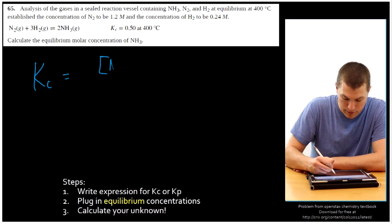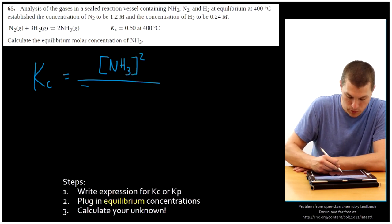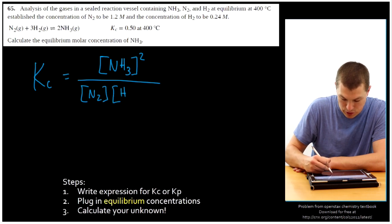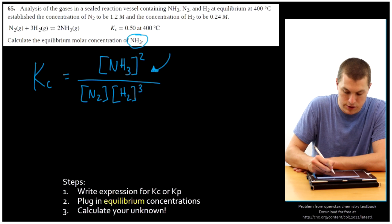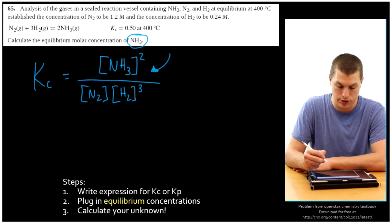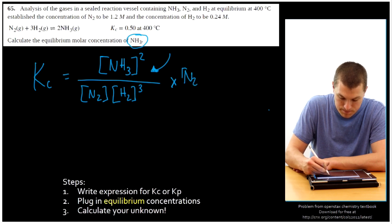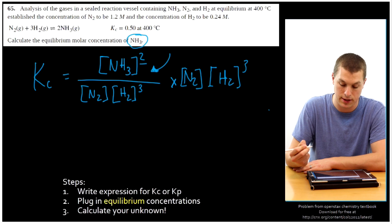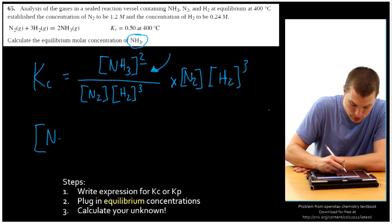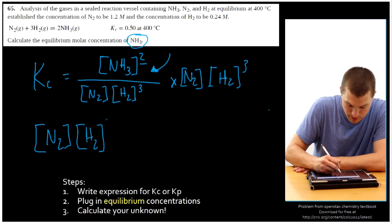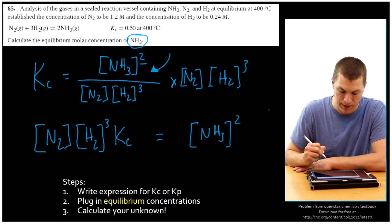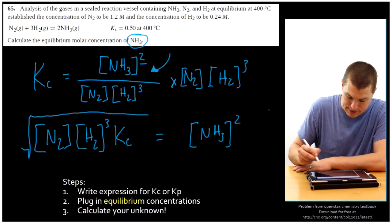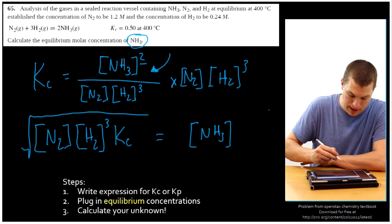We write the Kc expression with NH3 squared in the numerator — that's our product — and N2 times H2 cubed in the denominator. We want to solve for NH3, so before plugging in numbers, we do some algebra. We multiply both sides by N2 and H2 cubed, giving us Kc times [N2] times [H2]³ equals [NH3]². Then we take the square root of both sides to isolate NH3.